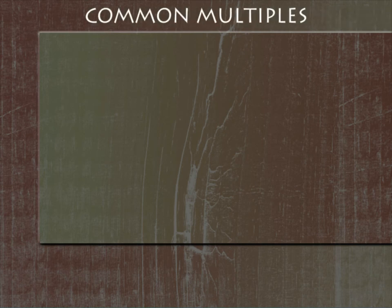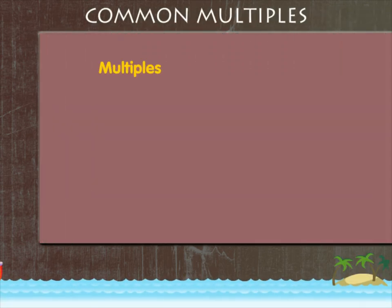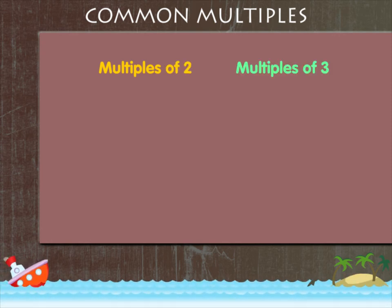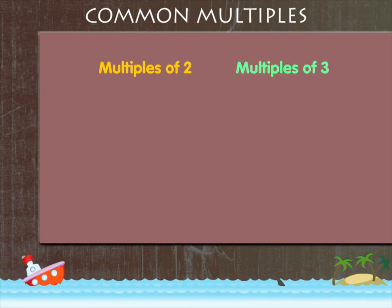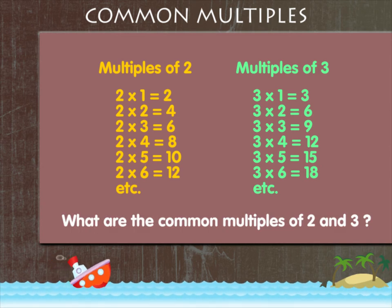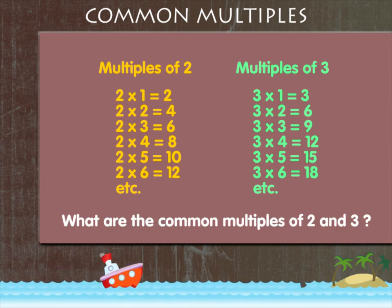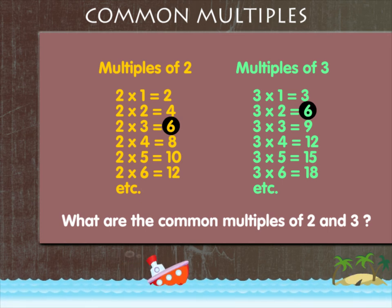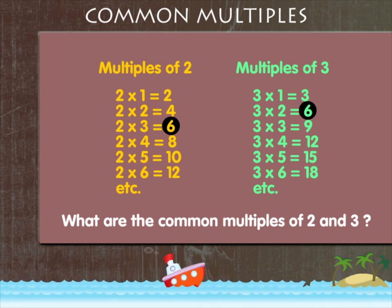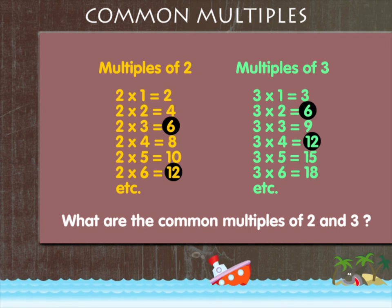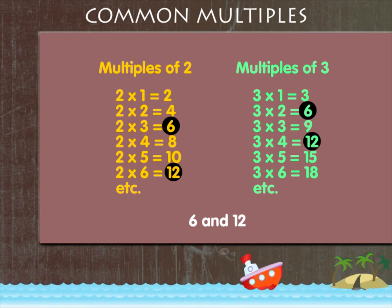Common multiples. You know what multiples are. Let's look at the multiples of 2 and 3. Here they are. What are the common multiples of 2 and 3? 6 is a multiple of 2 and 3. 12 is also a common multiple for both 2 and 3.